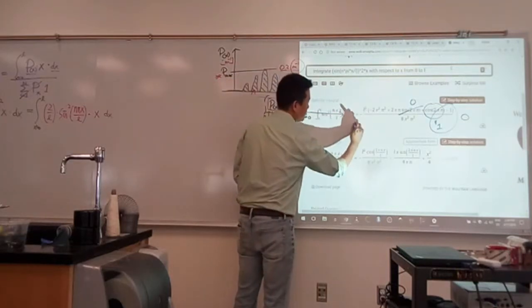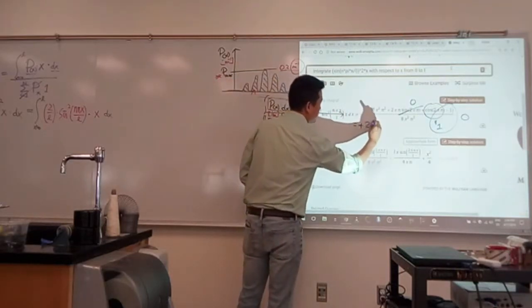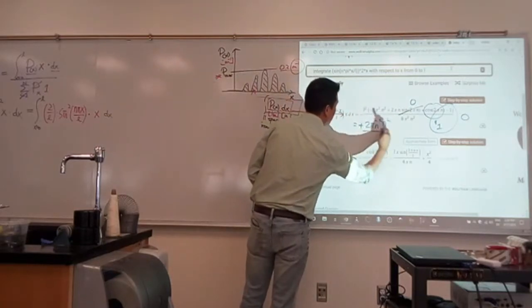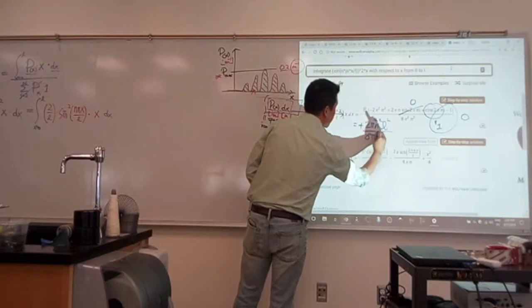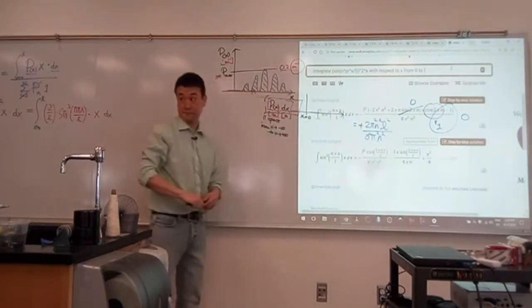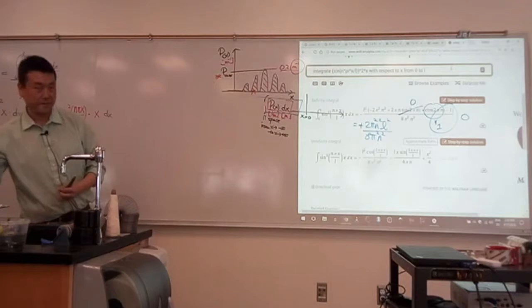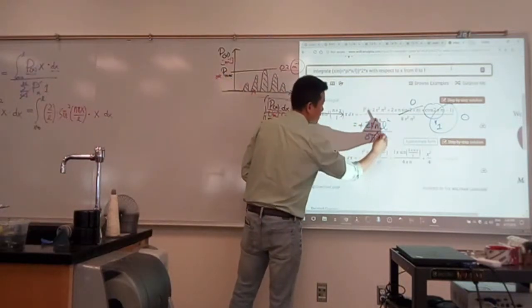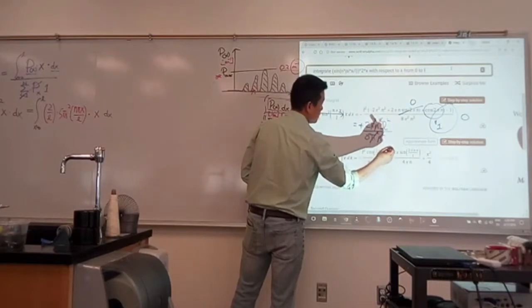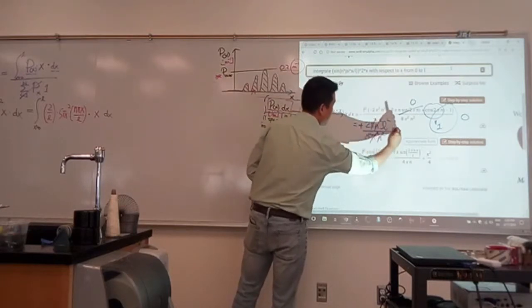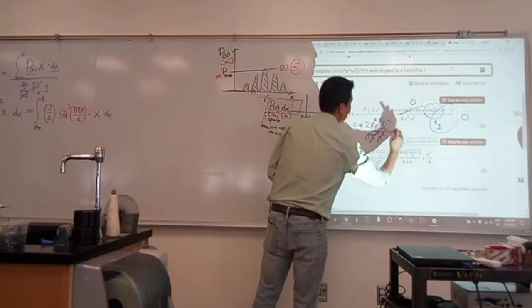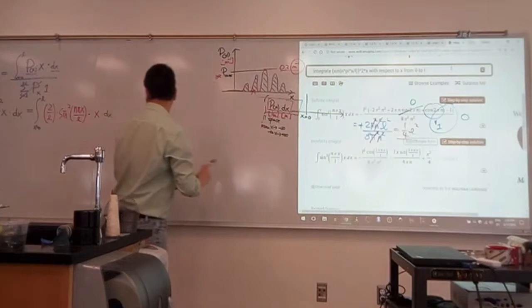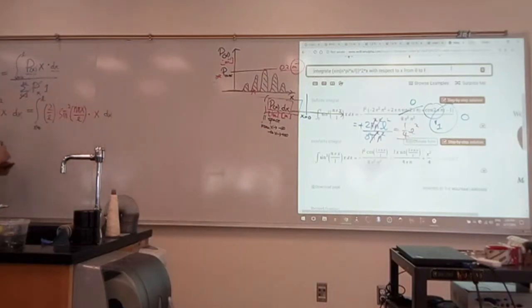So plus 2 pi squared n squared L squared over 8 pi squared n squared. So let me do this cancellation here. Pi squared cancel. N squared cancel. I guess, so I have 1 fourth L squared.